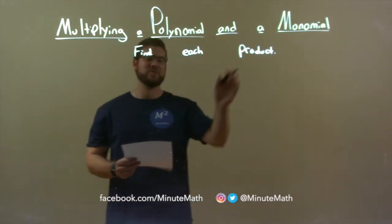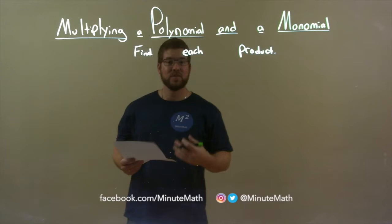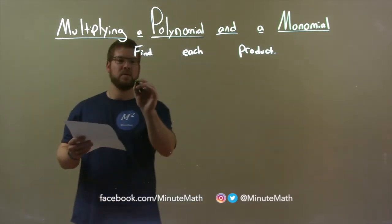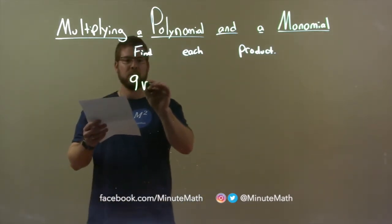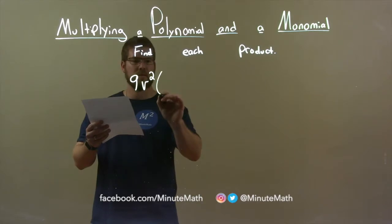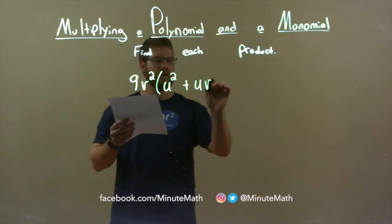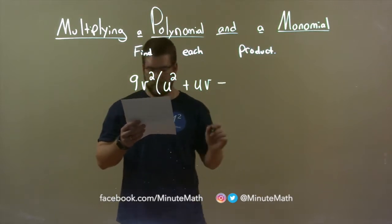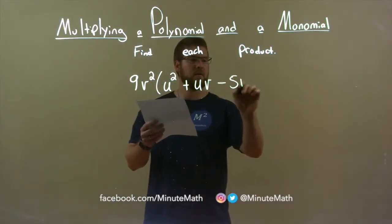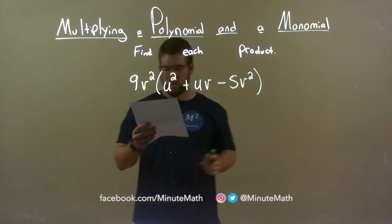We're finding each product. So, if I was given this product, 9v squared times u squared plus u times v minus 5v squared.